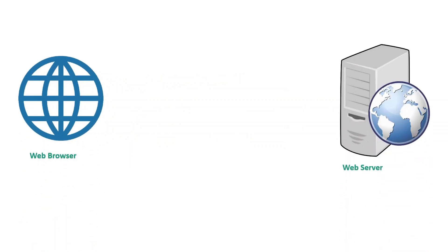We have a browser and a web server. When the browser initiates a request to the web server, before starting the actual communication, the SSL handshake will happen. Whenever using HTTPS protocol, the SSL handshake happens first. This means both client and server come to a mutual agreement on how the encryption is going to happen, so that whatever is encrypted by the browser can be decrypted by the server and vice versa. This mutual agreement is called the SSL handshake.